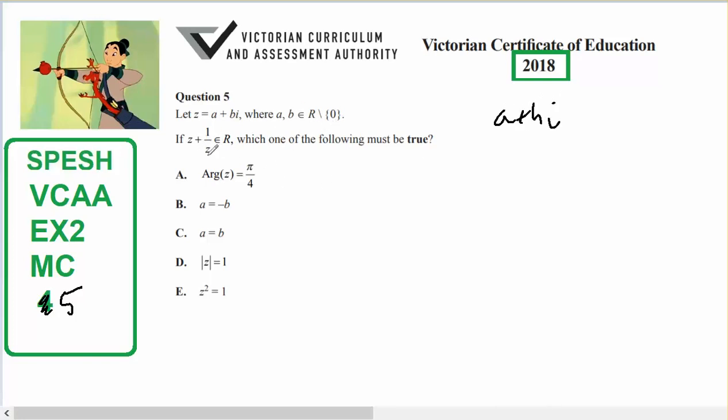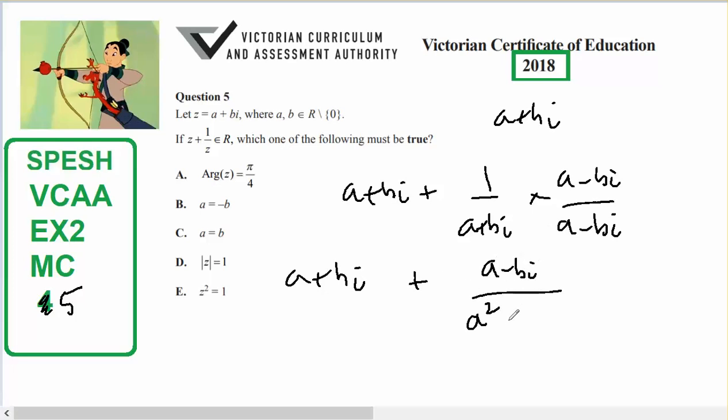So what does z + 1/z equal if it's only real, so the imaginary component doesn't exist? a + bi + 1/(a+bi). I'll multiply that by (a-bi)/(a-bi). This gives (a+bi) + (a-bi)/(a² - b²i²).